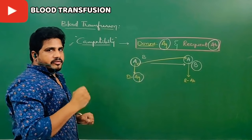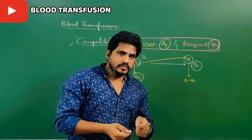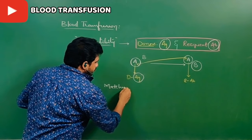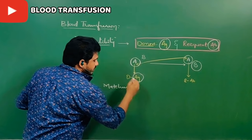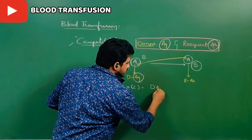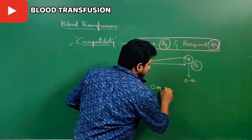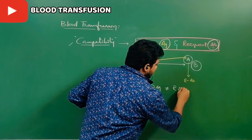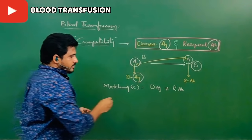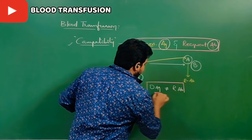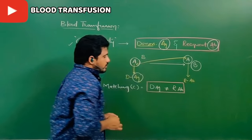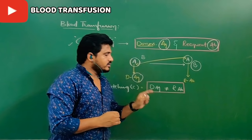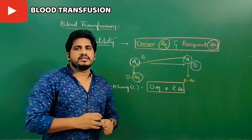During blood transfusions, reactions take place only between the donor's antigen and the recipient's antibody. Whenever you face a difficulty in a question, identify who is the donor and who is the recipient, then place the antibodies present in the plasma outside the RBC. Follow the formula: donor's antigen is going to react with the recipient's antibody. Donor's antibody and recipient's antigen do not participate in the reaction. The formula for compatibility is: donor's antigen is NOT equal to recipient's antibody — then blood transfusion is successfully done.